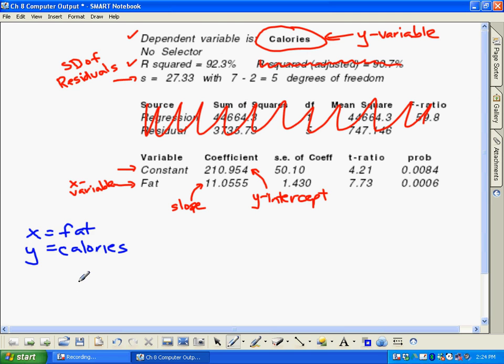And I could write out the line of best fit right now. I could say y hat equals - my y-intercept is 210.954 and then my slope is 11.0555 and then x. So that's your line of best fit.